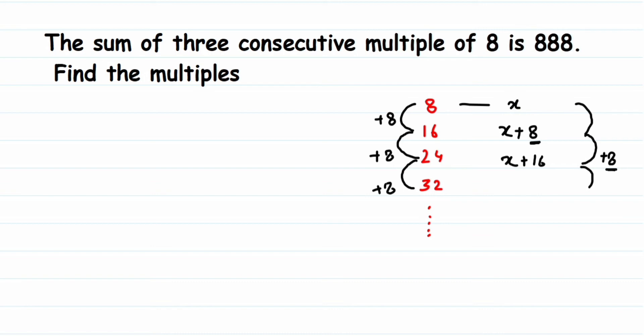For example, suppose x equals 16. Then the first number is 16, the second is 16 plus 8 which is 24, and the third is 16 plus 16 which is 32. So we get 16, 24, 32 — consecutive multiples of 8. The starting point doesn't have to be 8; it can be anywhere, as long as they are one after the other.